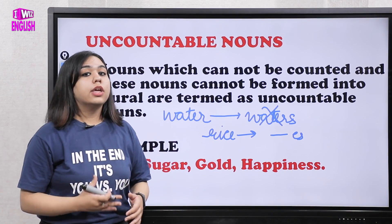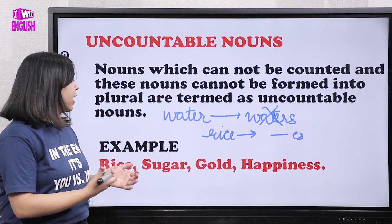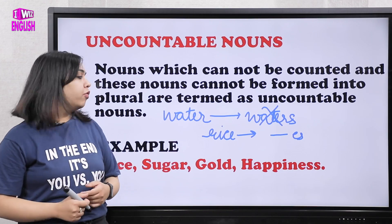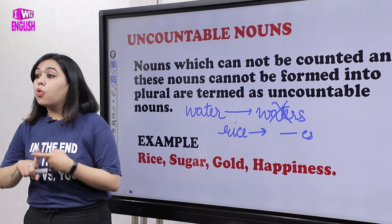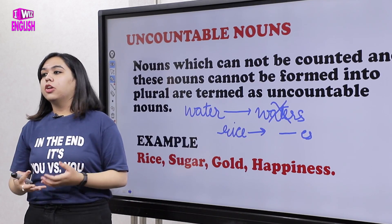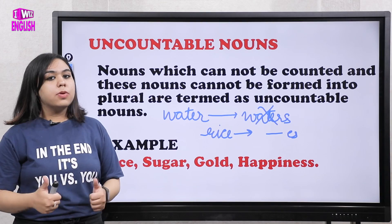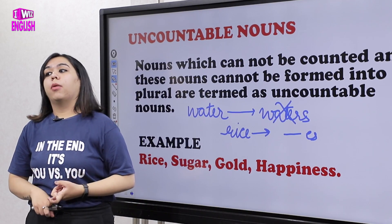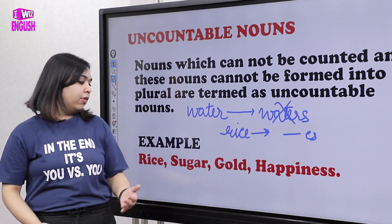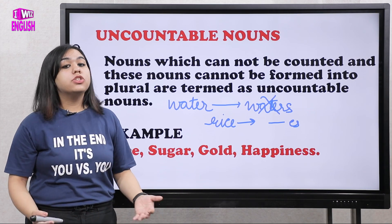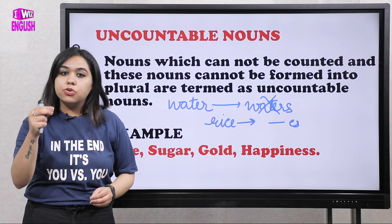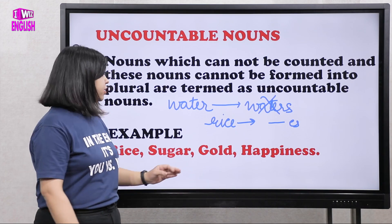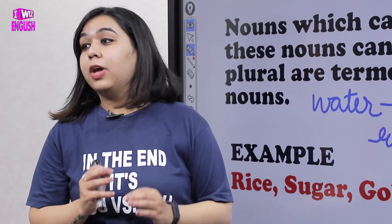You might ask: can't we say 'one liter of water' or '500 ml of water'? That is not counting — that is measuring. You are measuring the quantity. Under uncountable nouns, the key point is we cannot count them, but we can measure them. For example, 1 kg of rice, 2 kg of rice — we measure but cannot count 'one rice, two rice.' The same applies to sugar and gold.